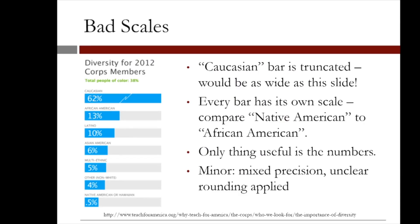This plot shows the relative breakdown of teachers by race in a certain teaching program. The Caucasian bar is truncated, which is a risky choice, but could be appropriate in some situations. A much bigger problem is that the scale of each blue bar is entirely different. For example, the Native American bar is about a third of the length of the African American bar, but there are more than 10 times as many African Americans in this program as Native Americans.